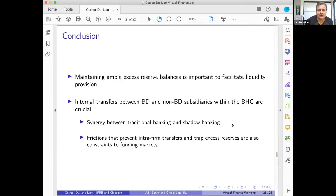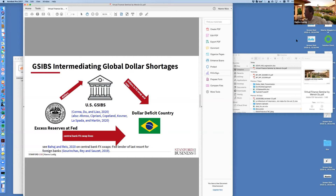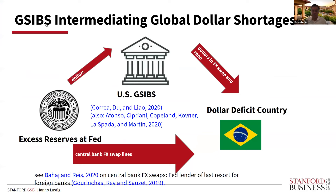Thank you very much Wenjin. Let me start by complimenting Wenjin, Gordon, and Ricardo on what I really think is a fascinating deep dive into the plumbing of the international financial system. This really requires an enormous amount of data work. We've learned that these GSIBs seem to be playing a crucial role in intermediating these dollar shortages by draining excess reserves at the Fed and then using FX swap and repo to channel these to wherever the dollar shortage is.